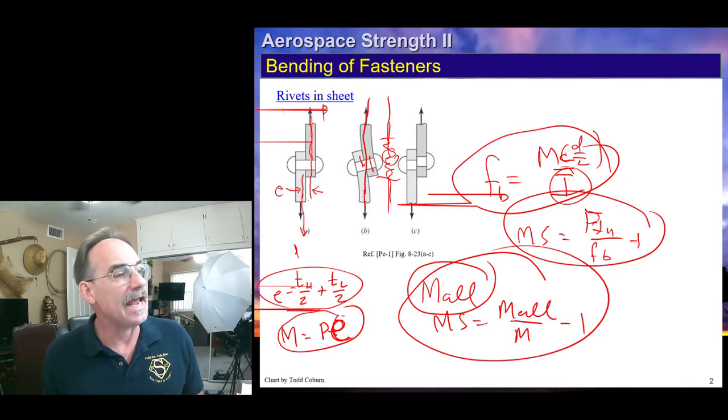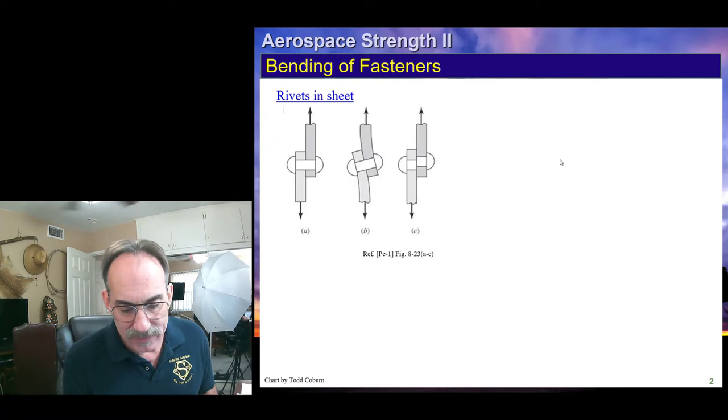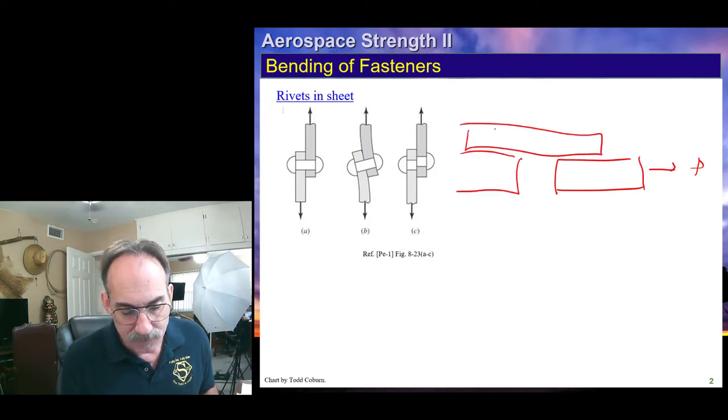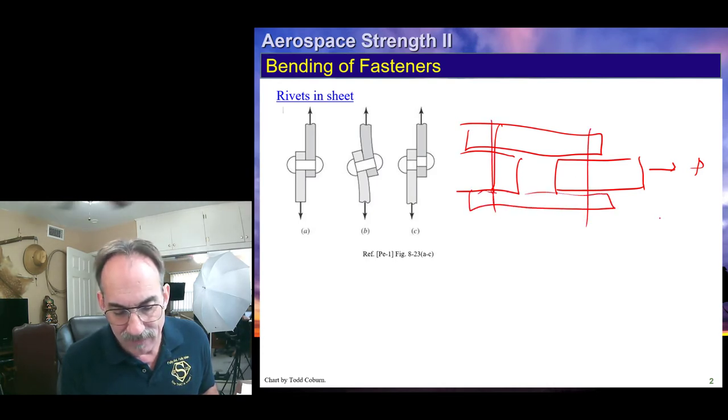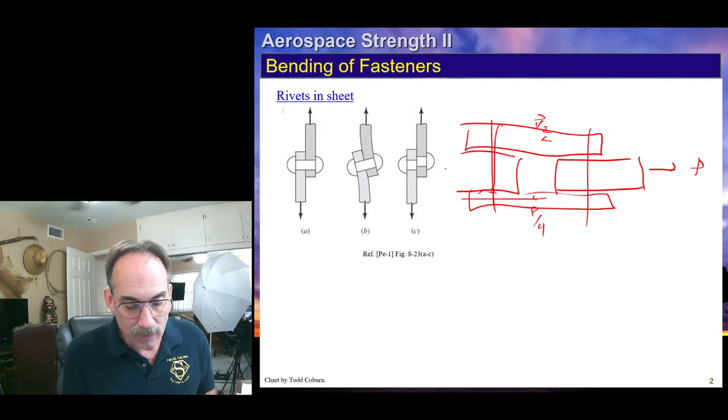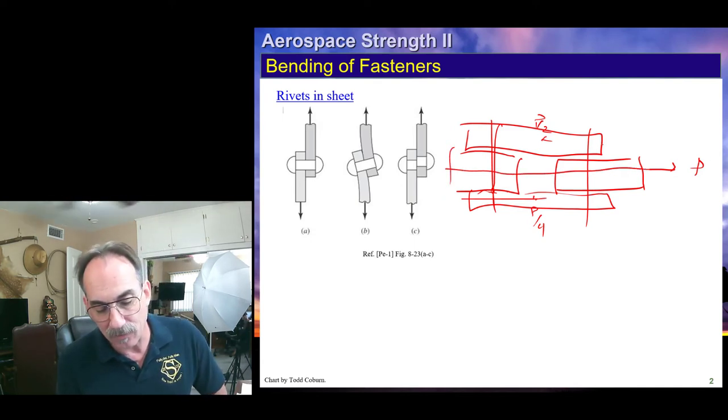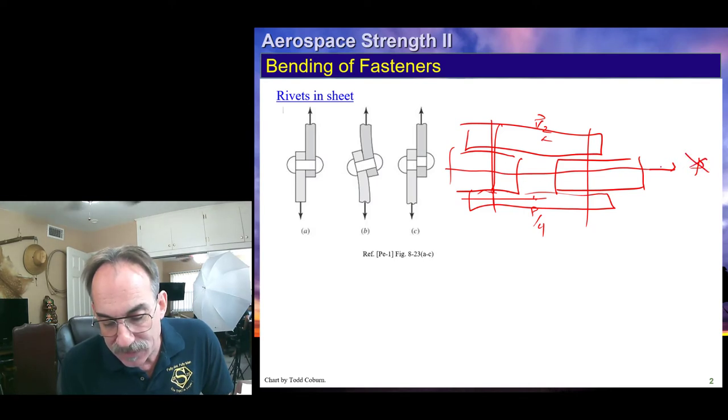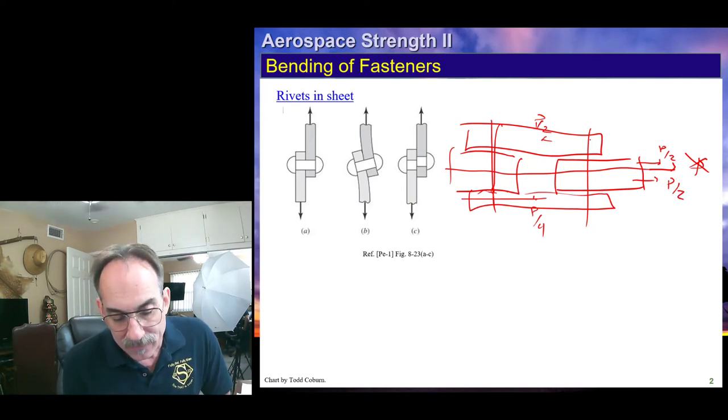Now, when we get a butt joint, the butt joint is designed to not have an eccentricity. Let's say we have a butt joint of a couple sheets with some plates here. We have a fastener here and a fastener here. We can see half that force is going to be going through here and half that force down here. This is designed to have like a net zero eccentricity between the lines of action, but there are some secondary moments that develop.